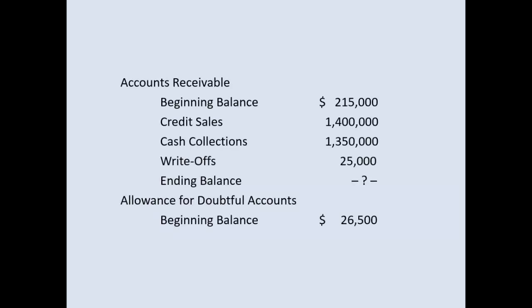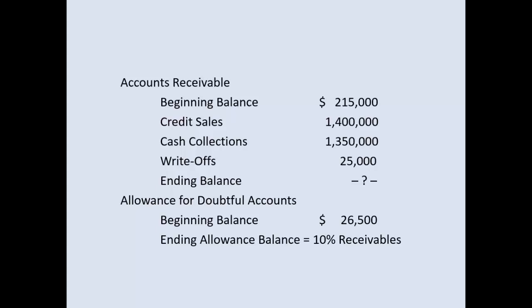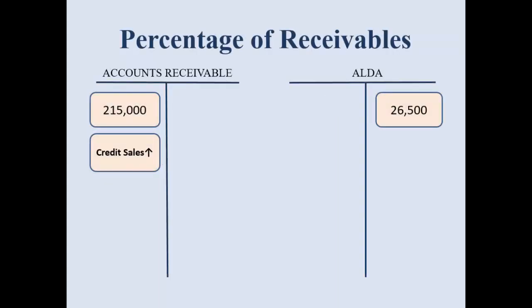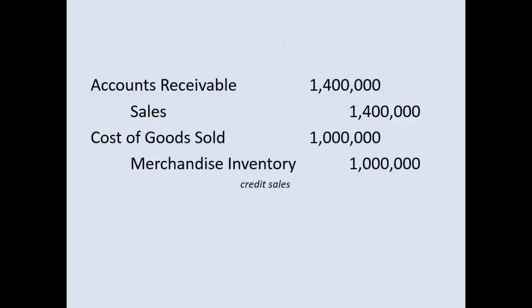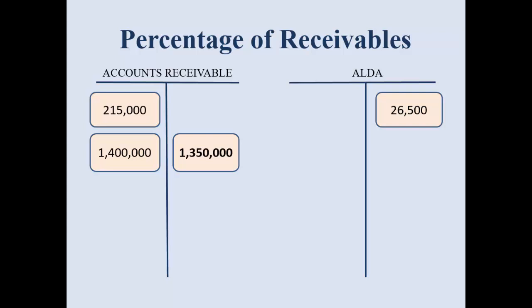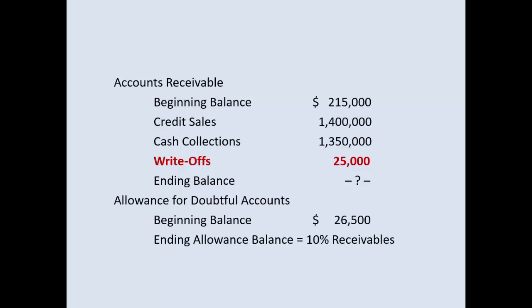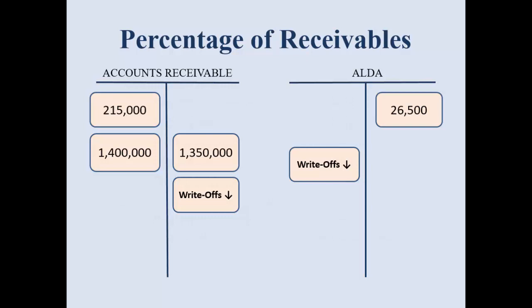We are going to use the same example from the percentage of sales video and look at how the calculation and the amount will be different. Start with your beginning balances and plug them into your T-accounts. Next, credit sales — this will increase accounts receivable — along with a cost of goods sold number of one million, which is just a made-up example for this demonstration. Cash collections will decrease accounts receivable throughout the year; this is a summary entry, as you would have had many entries when cash came in. Write-offs of 25: you debit the allowance account and credit accounts receivable when using the allowance method.